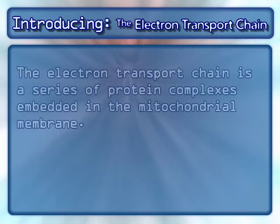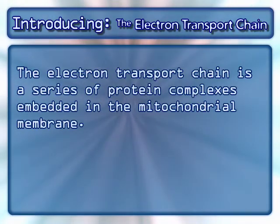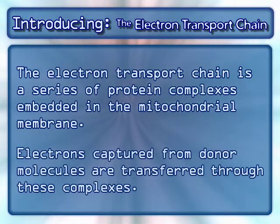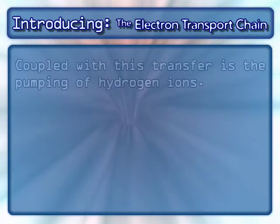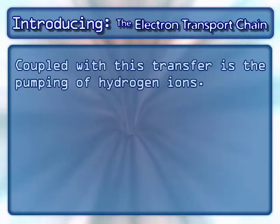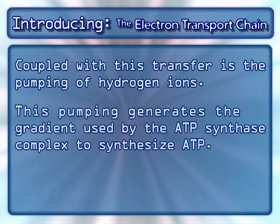The electron transport chain is a series of protein complexes embedded in the mitochondrial membrane. Electrons captured from donor molecules are transferred through these complexes. Coupled with this transfer is the pumping of hydrogen ions, which generates the gradient used by the ATP synthase complex to synthesize ATP.